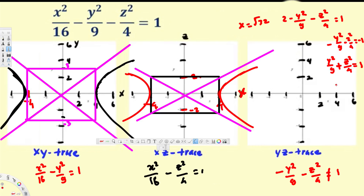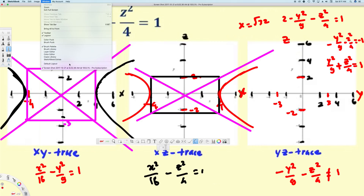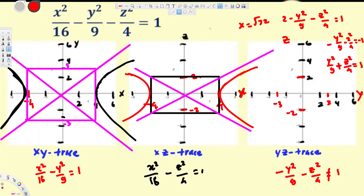For the ellipse, on the y-axis we have 9 = 3², so we place 3 and negative 3. For z, we have 4 = 2², giving us 2 and negative 2. Let's draw the ellipse. And that's our traces for the hyperboloid of two sheets. I hope this helps — thanks for watching!